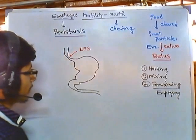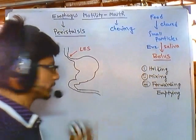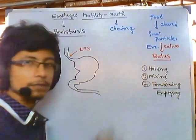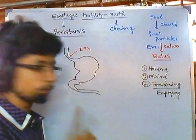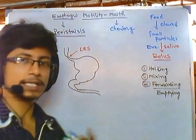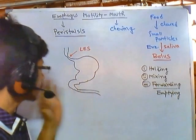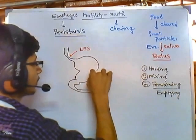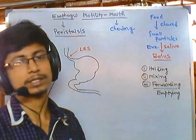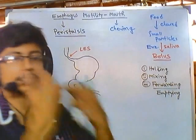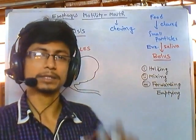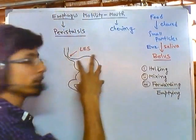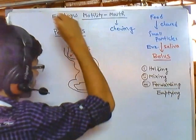Food migrates in, and the first function — holding — is simple. The second function is mixing. For mixing the food and also for emptying, both require the same important function: peristalsis again. Peristalsis helps the food mix properly and also to move forward. For holding the food we call it a relaxation process, because throughout the esophagus food was moving and now it gets some time to stay somewhere. So there are two motility processes in the stomach: relaxation and peristalsis.